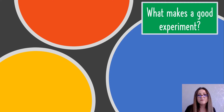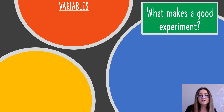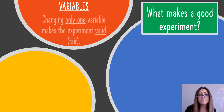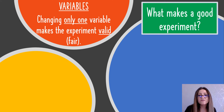To make a good experiment there are three things you really need to think about carefully. You need to think about variables: the variable you choose to change, the variable you choose to measure, and the variables you choose to keep the same. For a good experiment, you change one variable and everything else stays the same, and that makes the experiment valid.